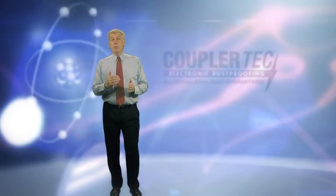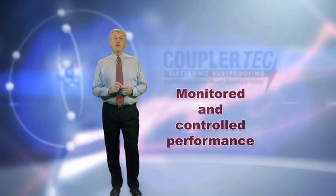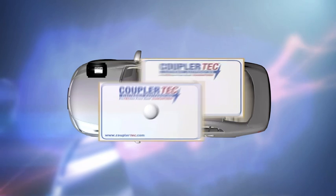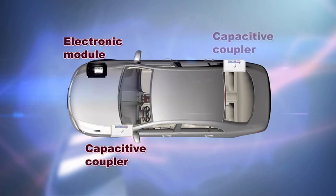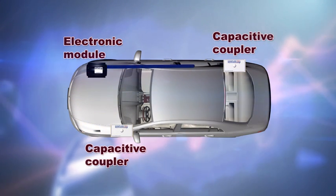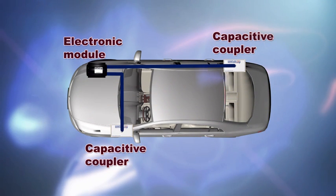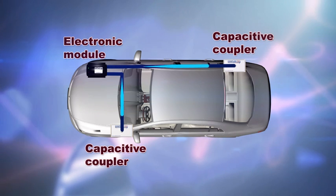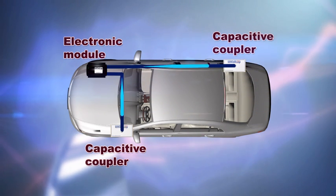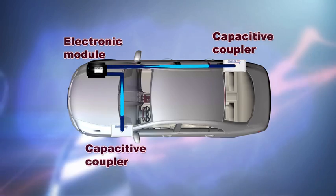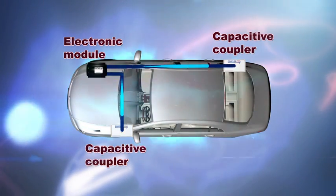All CouplerTech electronic rust proofing systems are fully digitally controlled using state of the art microprocessor technology similar to that found in current mobile phones. The microprocessor is programmed with a process called monitored and controlled performance. The microprocessor monitors and controls the activity between each internal circuit and their own dedicated capacitive coupler, and this ensures that the required level of energy, frequency and capacitance is applied constantly via the capacitive coupler to induce the electrons throughout the body of the vehicle or structure.